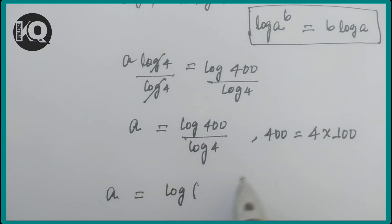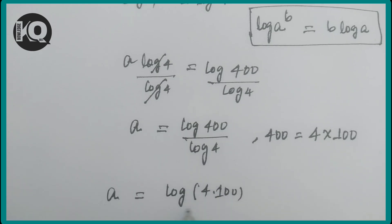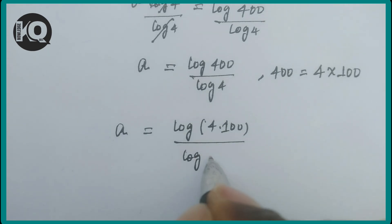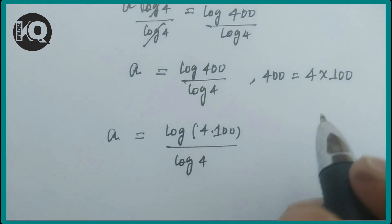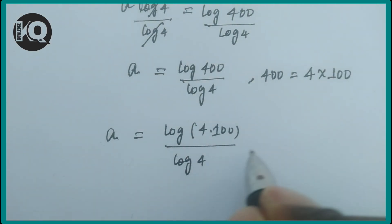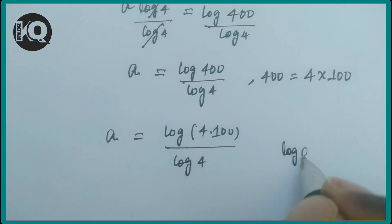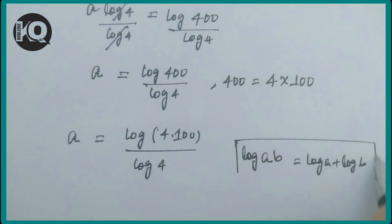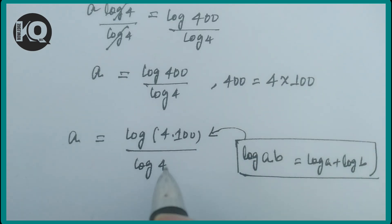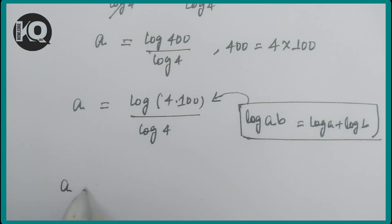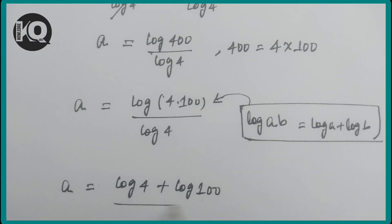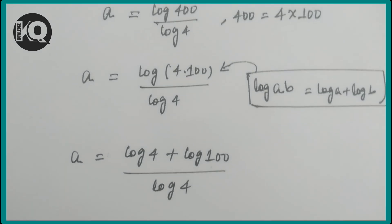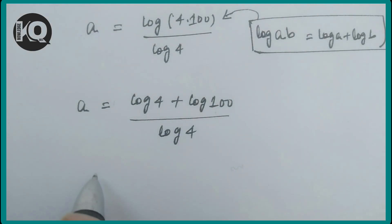So a = log(4 × 100) / log(4). Applying the product rule of logarithms — log(a × b) = log(a) + log(b) — the numerator becomes log(4) + log(100), giving a = [log(4) + log(100)] / log(4).